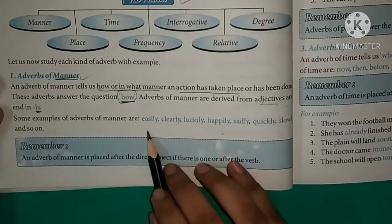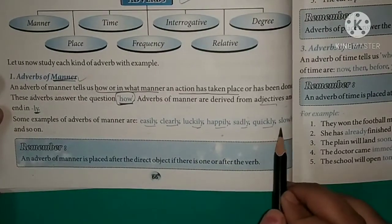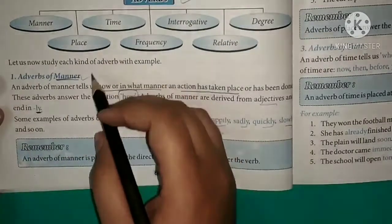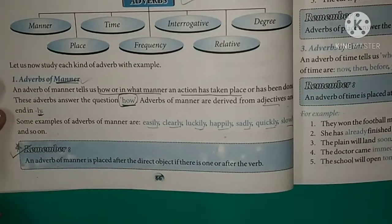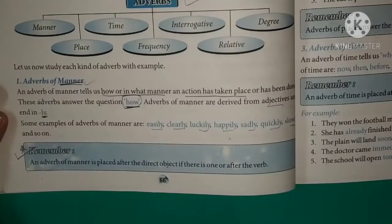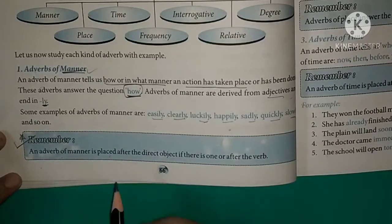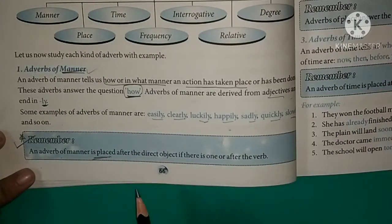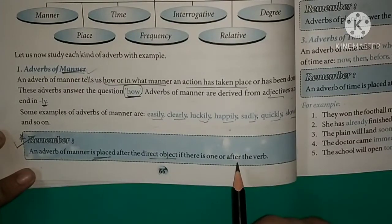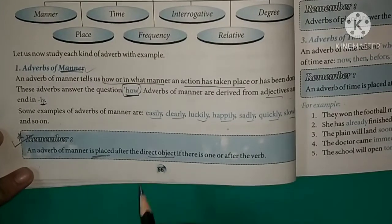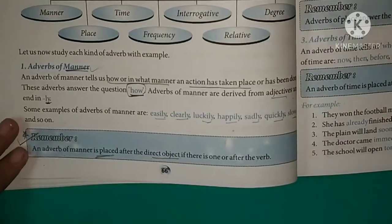Some examples of adverbs of manner: easily, clearly, luckily, happily, sadly, quickly, slowly, and so on. An adverb of manner is placed after the direct object if there is one, or after the verb — right after the verb or direct object comes the adverb of manner.